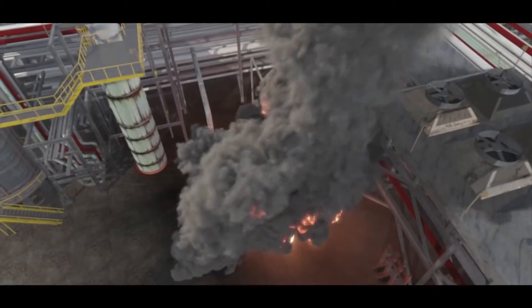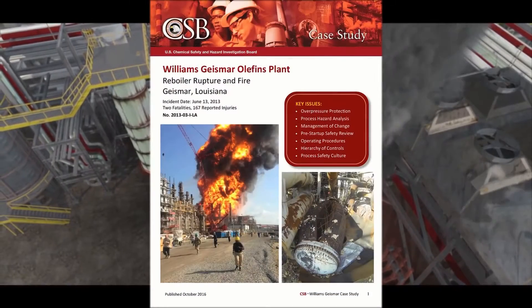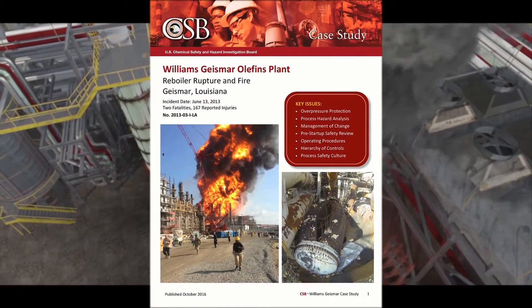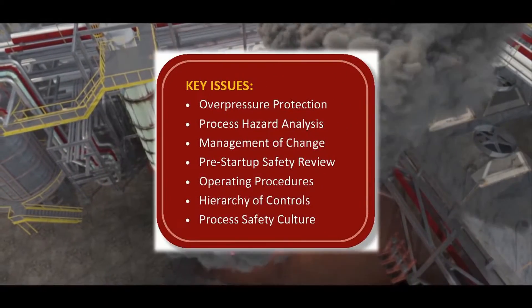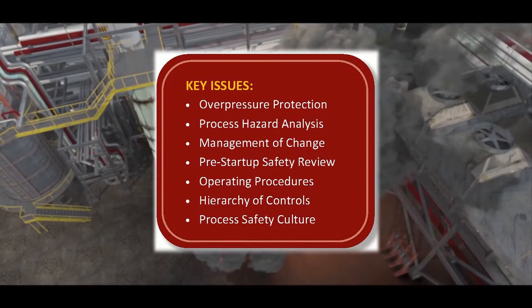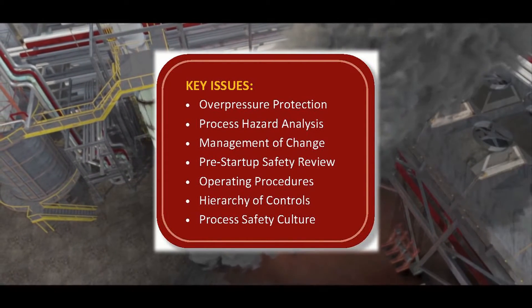The Chemical Safety Board launched an investigation and issued a case study. In it, the agency describes a number of process safety management program deficiencies at Williams, which set the stage for the incident.